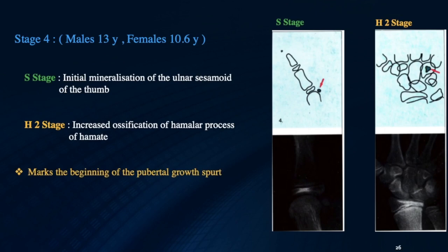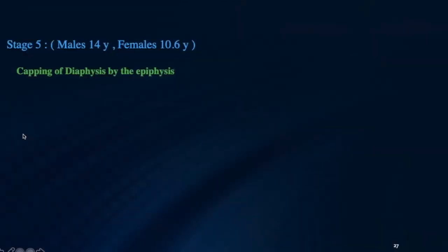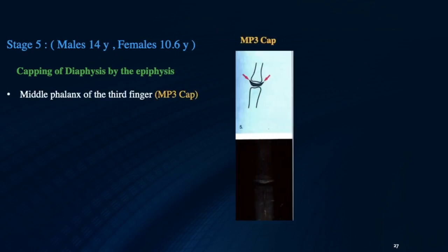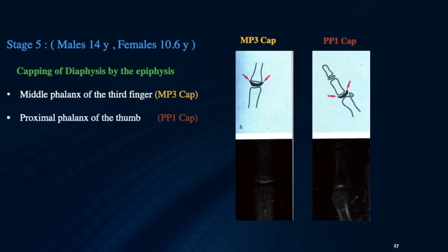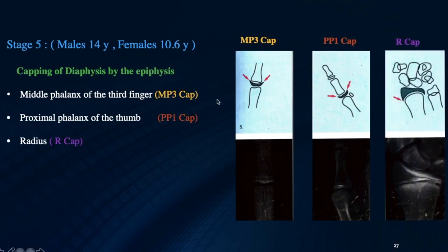Stage 4 is very important because it marks the beginning of the pubertal growth spurt. We can expect to see this stage in males around 13 years of age and in females around 10 and a half years of age. In Stage 5, there is capping of the diaphysis by the epiphysis in three areas: in the middle phalanx of the third finger (MP3 cap), in the proximal phalanx of the thumb (PP1 cap), and in the radius (R cap).